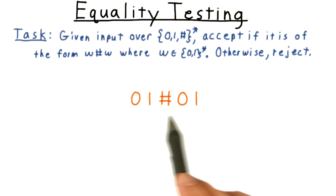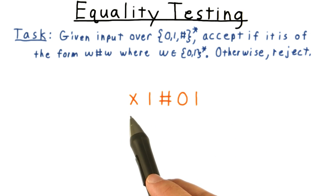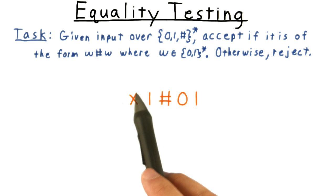I'll illustrate the basic idea on this example. First, we x out the first symbol on the tape, and then we're going to go look to see if the first element past the hash is the same symbol, so the fact that I read a zero here somehow has to be encoded in the machine's state.